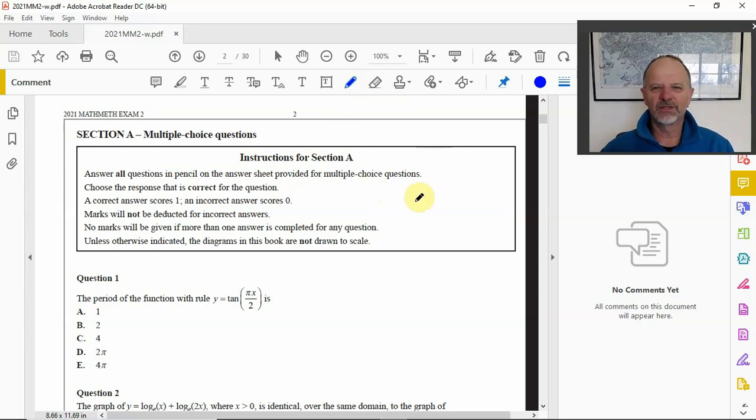In the instructions, just pulling out a couple of things: correct answer you get one mark, incorrect answer zero. Marks will not be deducted for incorrect answers. So putting those two things together, if you don't know an answer in the end you should somehow come up with one, even if at the last resort it's a guess, because you don't get deducted if it's incorrect.